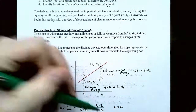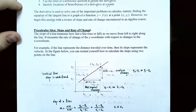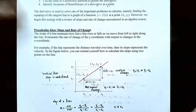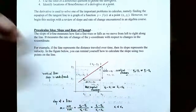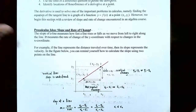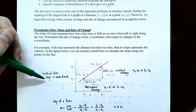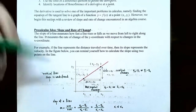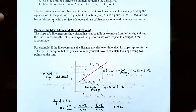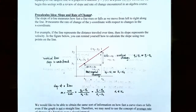This formula works as long as the denominator is not zero — in other words, the x values cannot be the same. If the x values are the same, you have a vertical line and the slope is undefined. What we'd like to do is obtain the same sort of information about how fast a curve rises or falls, even if the graph is not a straight line.